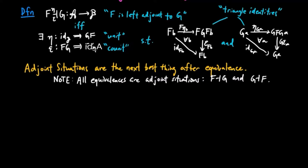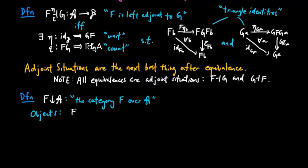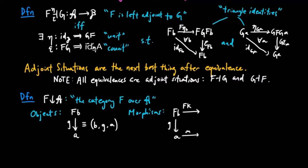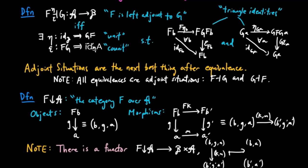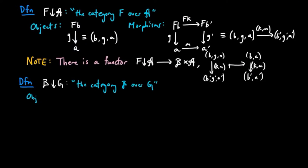We will see that adjoint situations can be understood by a variety of perspectives. We will need the following definitions before we show the equivalent formulations. We begin with the definition of the category F over A. Its objects consist of A-morphisms G from FB to A, which we also denote by (B, G, A). A morphism from G to G' consists of a B-morphism K and an A-morphism M, such that FK followed by G' equals G followed by M. Note that there is a forgetful functor from F over A to the product of B and A, where the object (B, G, A) gets sent to (B, A), and the morphism (K, M) to (K, M).